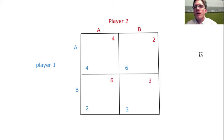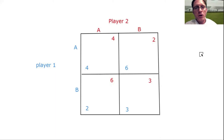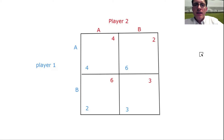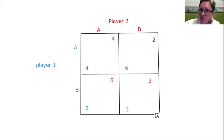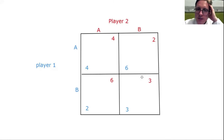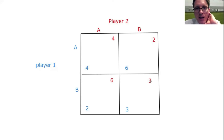We're going to look for a Nash equilibrium. A Nash equilibrium is a set of strategies — one strategy for player two and one for player one — where neither player would want to unilaterally, meaning on their own, be the only one to change their strategy. You check for a Nash equilibrium box by box, for each possible outcome. If they're in a given box, it indicates each player's chosen strategies, and we ask whether either player would want to deviate.